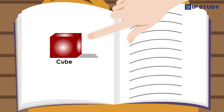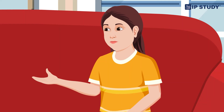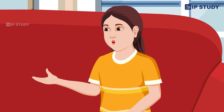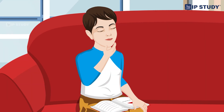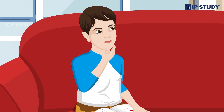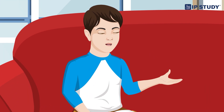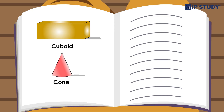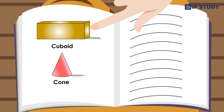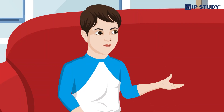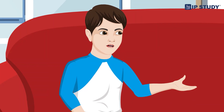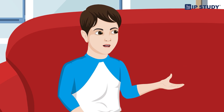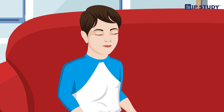This is a cube shape. Can you think which object it resembles? It looks like a dice which we use for playing. Now Amal, these are a cuboid and a cone. Doesn't this cuboid look like a brick and this cone like an ice cream cone?